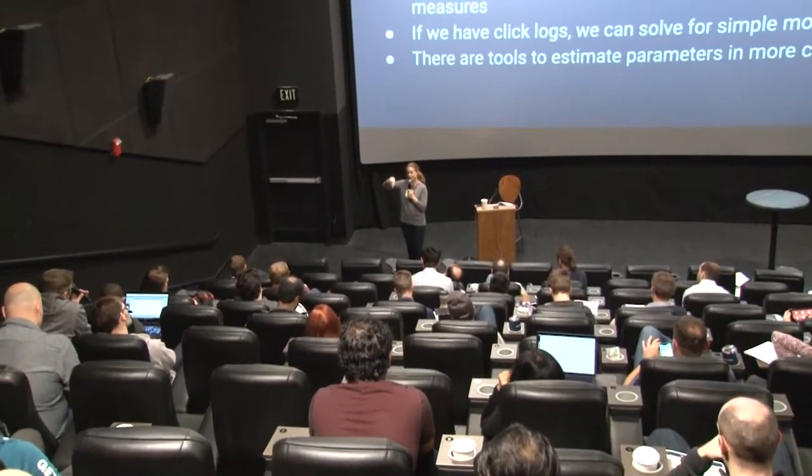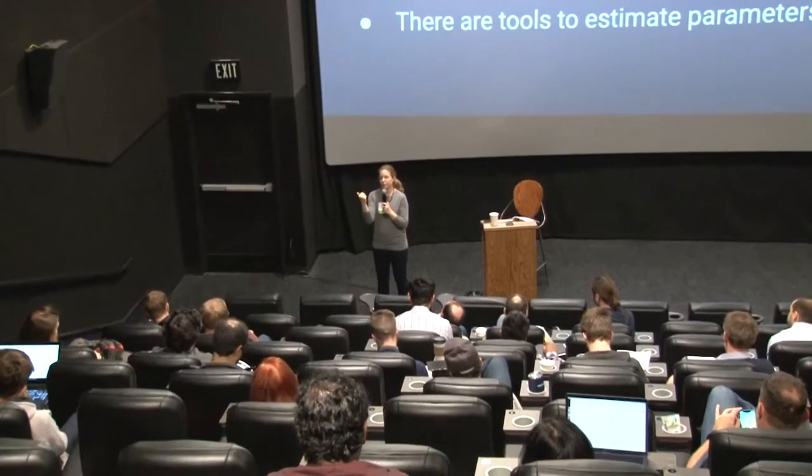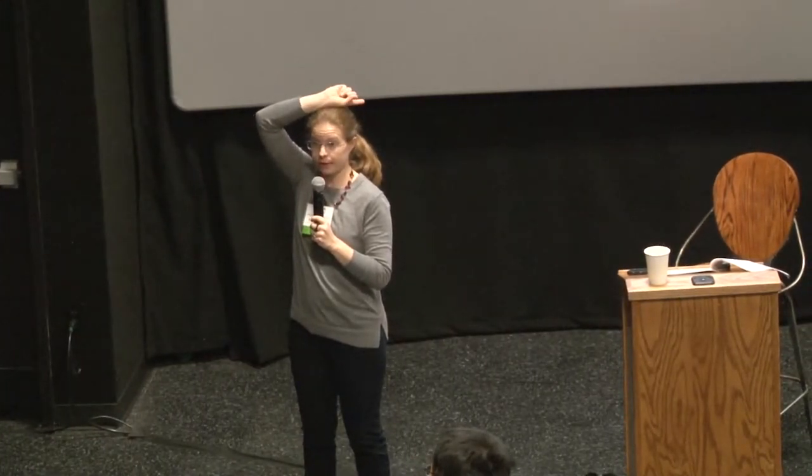Overall: using categorical judgments is appropriate for human raters but is much more challenging to reason about and solve for when using computer ratings. So let's stop talking about our ratings as one, two, three, four, five and start talking about them as probabilities. We can deal with numbers from zero to one, the math makes sense, and it works with both the metrics we've been using for 25 years and the summary metrics we use today. If we have enough click logs, we can solve for really simple models directly. There are techniques to estimate more complicated ones.